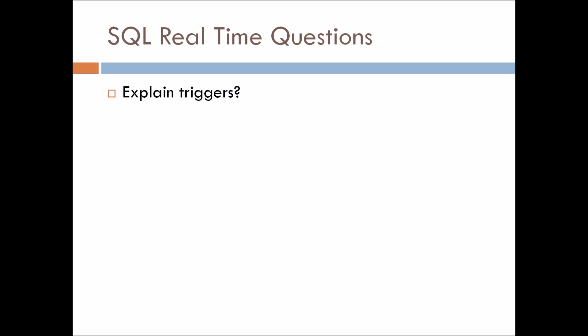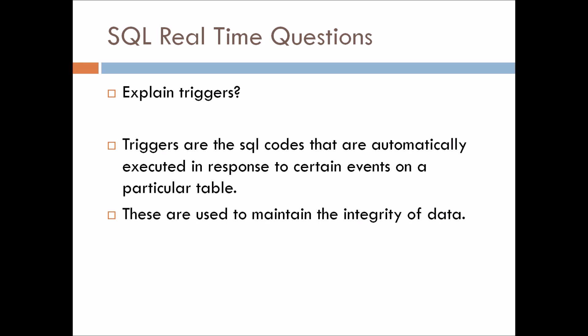Explain triggers — this is the last question of this video. Triggers are SQL code that are automatically executed in response to certain events on a particular table, and they are mainly used to maintain the integrity of data. So in this way you can answer what triggers are.